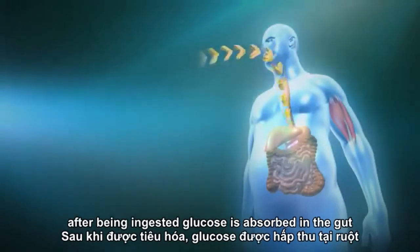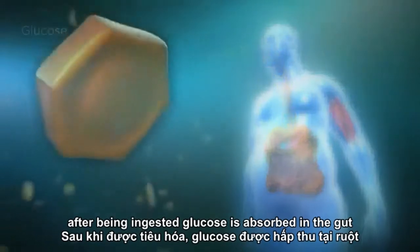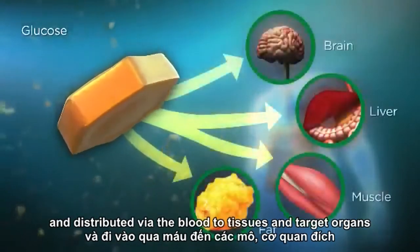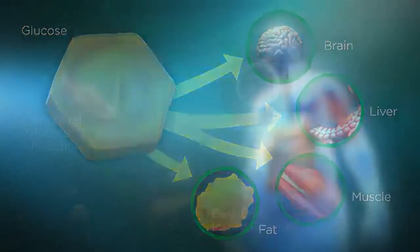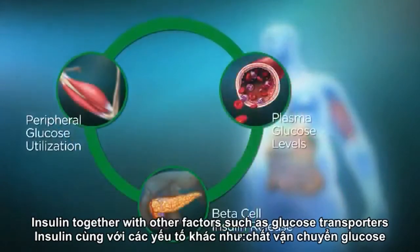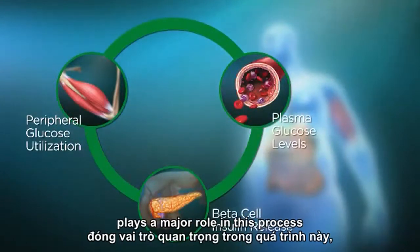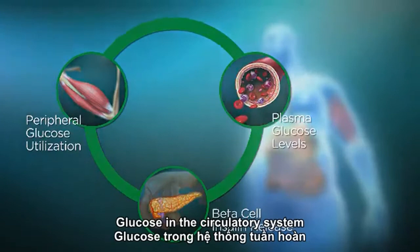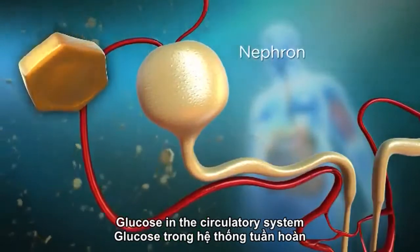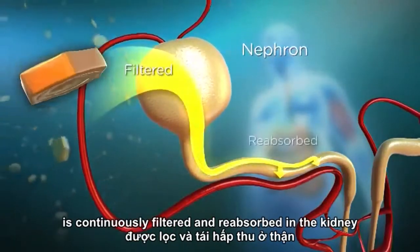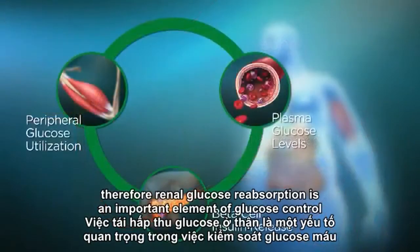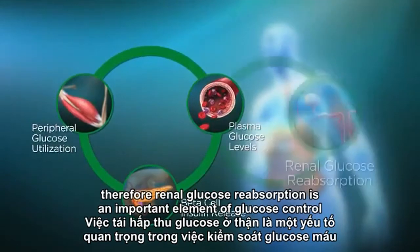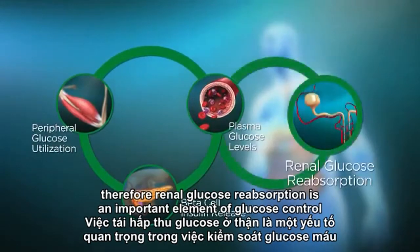Glucose metabolism involves several steps. After being ingested, glucose is absorbed in the gut and distributed via the blood to tissues and target organs. Insulin, together with other factors such as glucose transporters, plays a major role in this process. Glucose in the circulatory system is continuously filtered and reabsorbed in the kidney. Therefore, renal glucose reabsorption is an important element of glucose control.